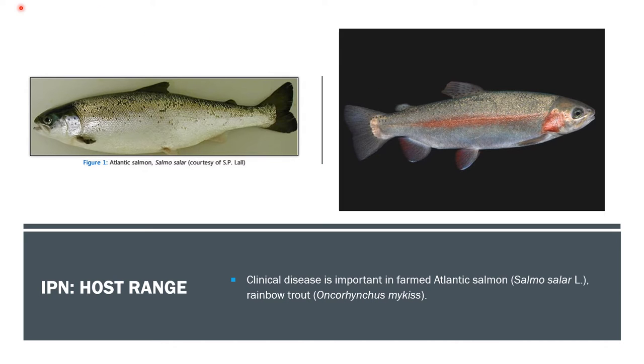For the host range of IPN, the clinical disease is important in farmed Atlantic salmon, or Salmo salar, and the rainbow trout, or Oncorhynchus mykiss.